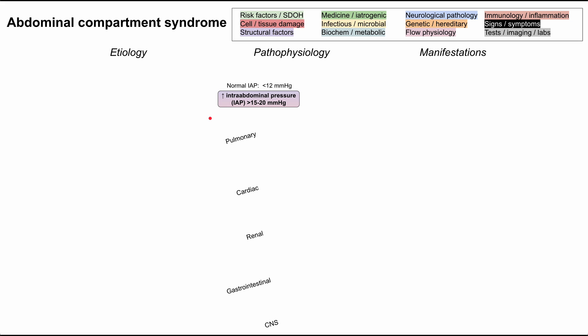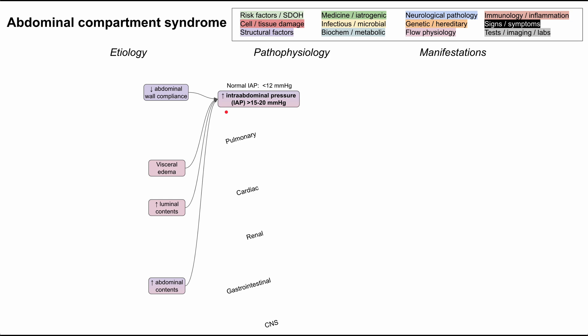The etiology of abdominal compartment syndrome — how intra-abdominal pressure gets so high — can be broken into four buckets. First, decreased abdominal wall compliance: the abdominal wall is supposed to be compliant and flex as pressure increases, but when something restricts it from bending, that raises IAP. Second, visceral edema — swelling of the organs inside the abdomen. Third, increased luminal contents such as bowel contents.